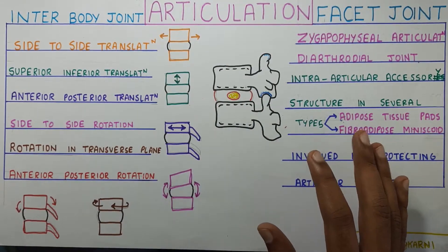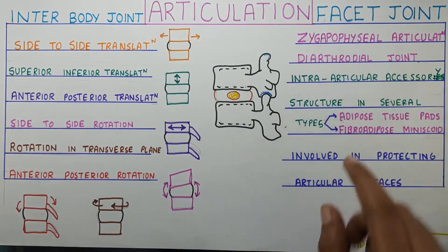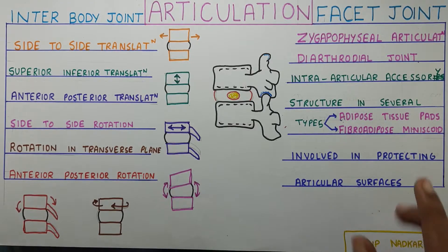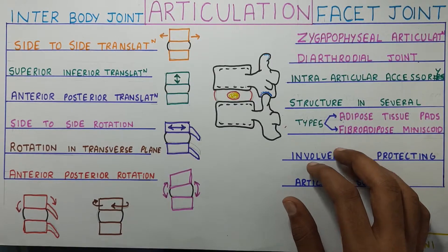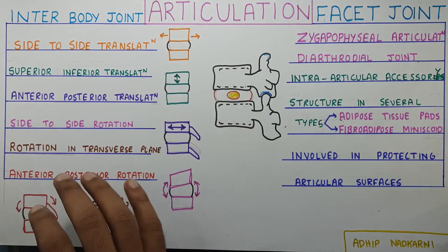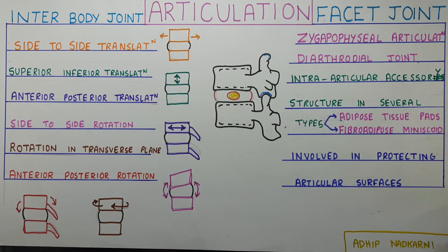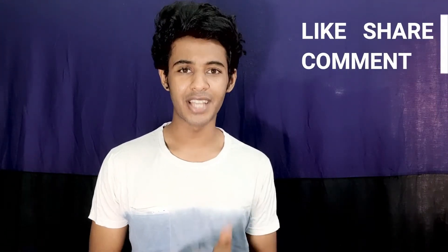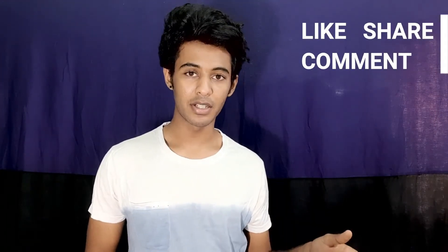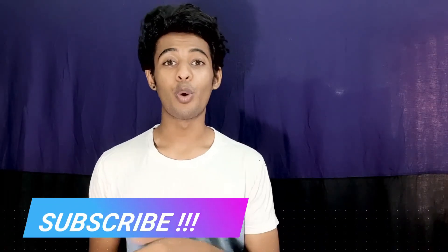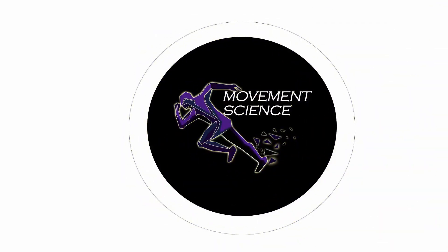So we saw the facet joint, which has accessory structures like adipose tissue pads and fibro-adipose meniscoid that help in protecting the articular surfaces. And then we saw the interbody joint, which has different movements at the interbody segments. That's all for today, guys. Thank you for watching. If you like my video, please share it with your friends, hit the subscribe button, and like the video. Let me know in the comments what other videos you'd like me to cover. See you soon. Bye.